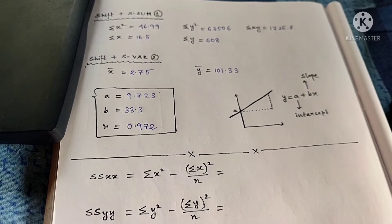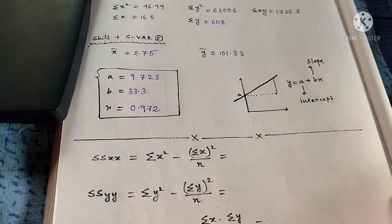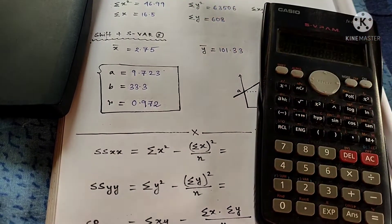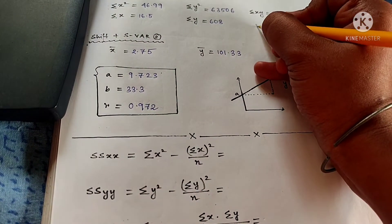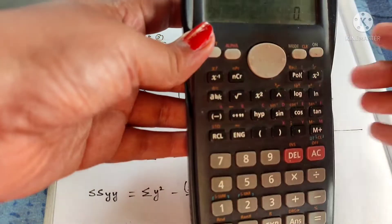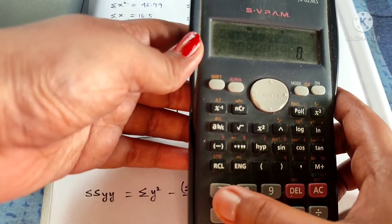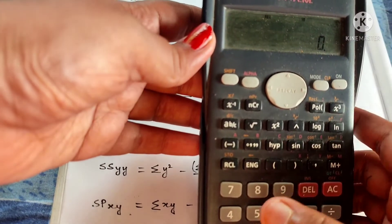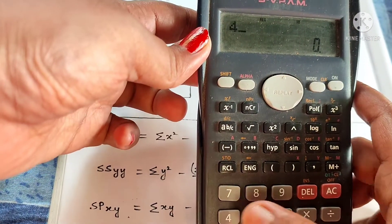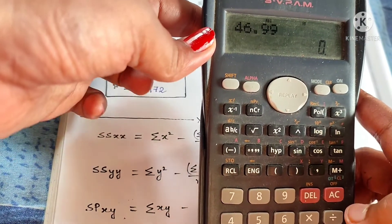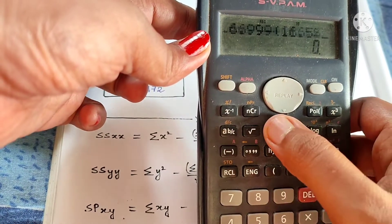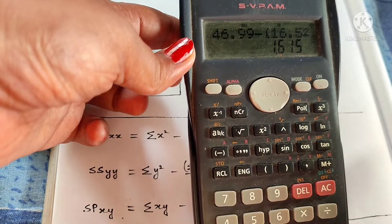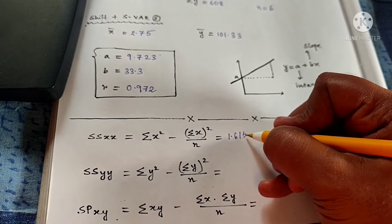Let's see what the values are. Summation of X square equals 46.99 and summation of X equals 16.5. In our problem, n was 6. So the values will be 46.99 minus 16.5 squared divided by 6, which equals 1.615. So write it down: SS_xx equals 1.615.